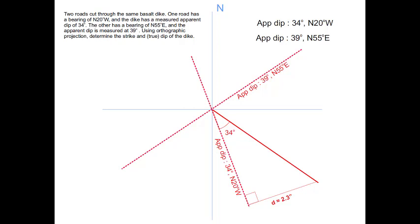I'm going to start with the first apparent dip. It's 34 degrees north 20 west. So I need a 34 degree angle. I'm going to use my protractor to measure that out and draw in a line at that appropriate angle.